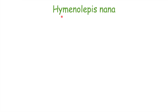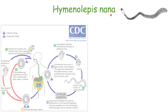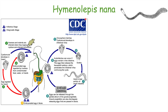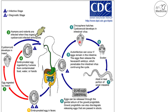The next tapeworm species is Hymenolepis nana. When a human is infected with Hymenolepis nana, they release embryonated eggs in their feces. That egg is then ingested by an insect, and a cysticercoid develops in the insect. A human patient will then inadvertently ingest that cysticercoid-infected insect or arthropod — this can also happen in rodents — leading to the development of an adult tapeworm.